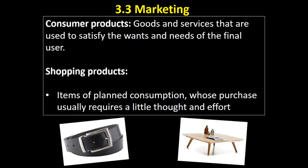Shopping products involve more planned consumption — the purchase requires a little thought and effort. These are not impulse buys; things like belts or pieces of furniture are items you generally think about purchasing and might go on a special shopping trip to buy. In terms of the marketing mix, it's important that consumers know where to find these goods, and promotion is key so people are aware of your brand and prepared to spend money on your product. Price may be less critical.